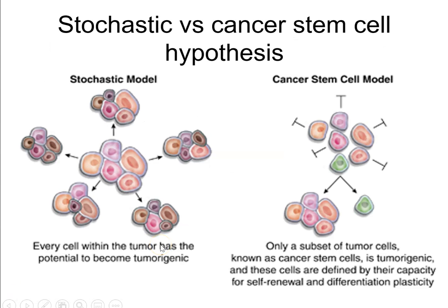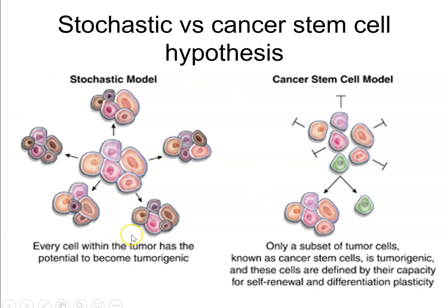There are two competing polar opposite hypotheses relating to how cancers are maintained and propagated. The stochastic model — the older view — holds that any single cell from a tumour will be able to generate a new tumour, that all cells are equally drug sensitive or resistant, and any cell from the primary tumour could potentially induce a metastasis. We have fairly strong data to suggest this is not necessarily always true, but in some cases it might be.